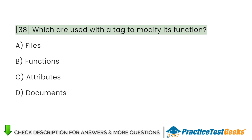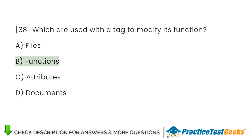Which are used with a tag to modify its function? A. Files. B. Functions. C. Attributes. D. Documents.